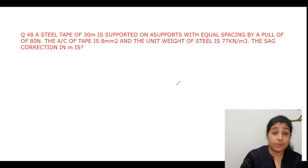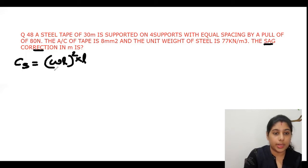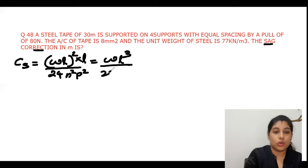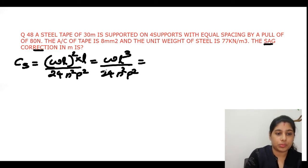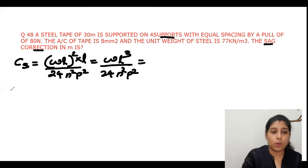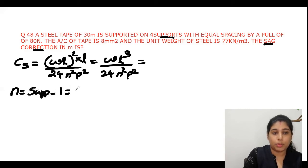Here comes our problem 48. This is a very, very important question related with the sag correction. What is our sag correction equation? Those who didn't watch the video of tape correction equations please go back and just watch it. Our sag correction equation is equal to w*L² × L / (24*n²*P²). That is, we said that it is w*L³ / (24*n²*P²). They have said that 4 supports, so obviously n will be always support minus 1, that is 4 minus 1 which is 3.